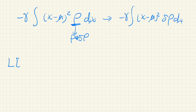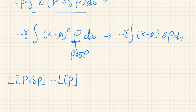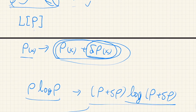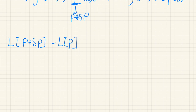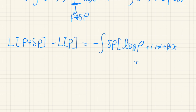To summarize, L(ρ + δρ) − L(ρ) equals the negative integral of δρ · [log ρ + 1 + α + βx + (γ/2)(x−μ)²] dx. (We insert a factor of 1/2 in front of γ for later convenience — γ/2 is still just a constant.)